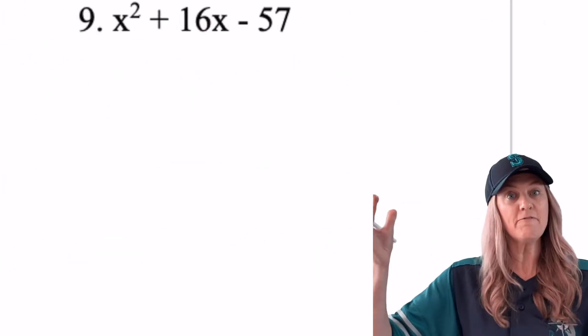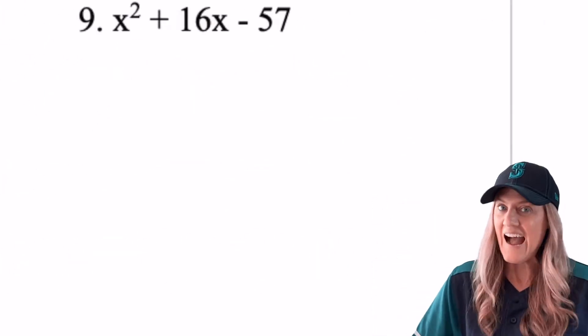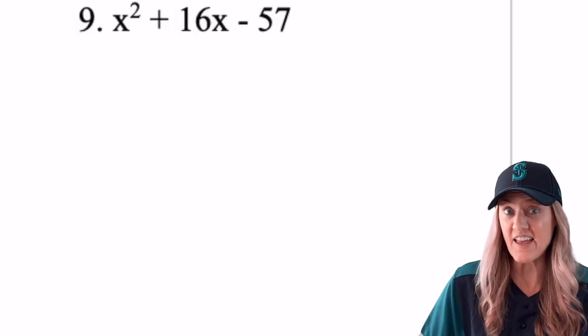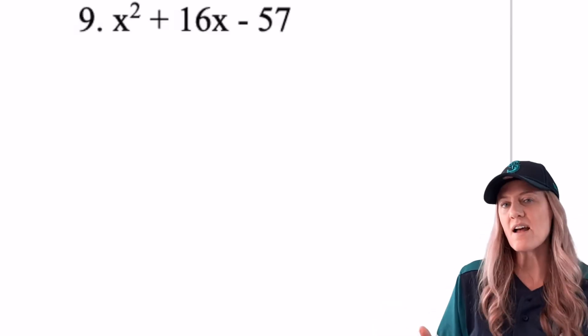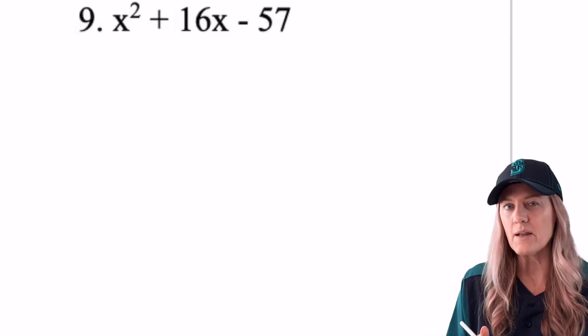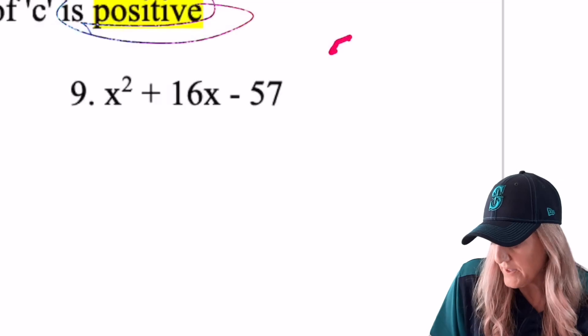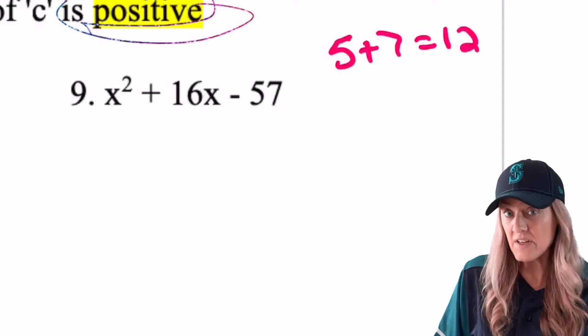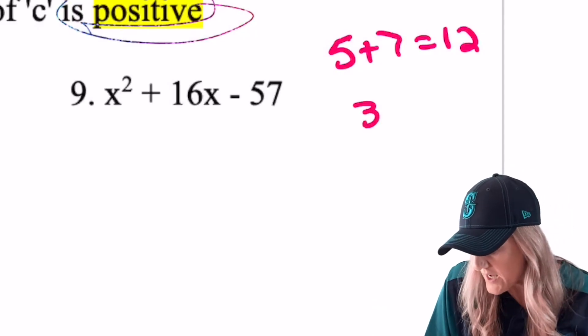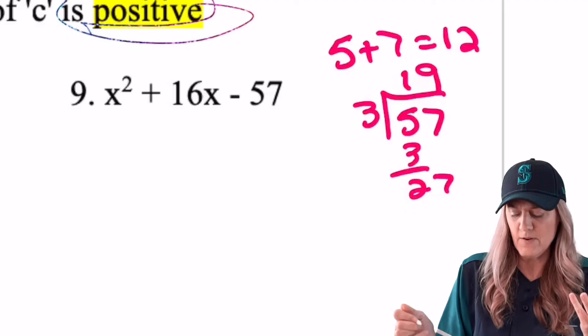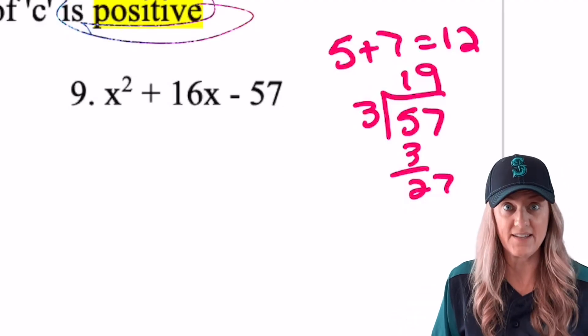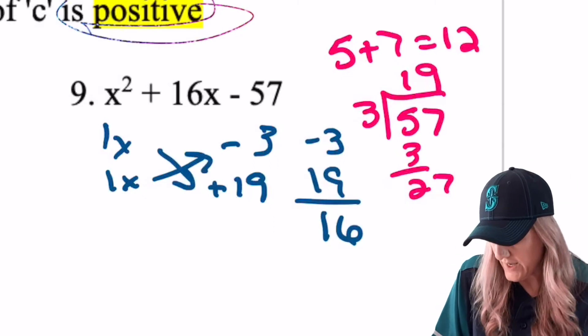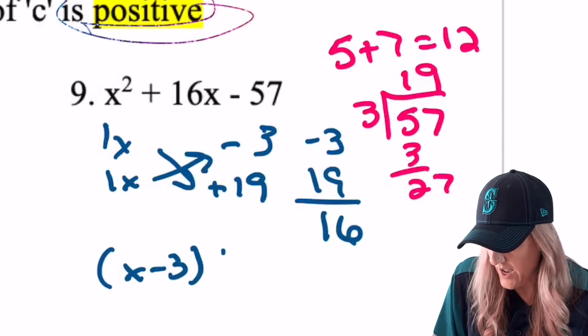What about this last one? 57 is our C value. I like 57. Doesn't it look prime? I always think it looks prime, just like 51 looks prime. But it's not prime. We know it's not divisible by 2 because it's not even. But what about 3? Well, let's check. 5 plus 7 is 12. 12 is divisible by 3. Therefore, 57 is divisible by 3. So 3 into 57. 3 times 19 is 57. I got it. Want to race now? Yep. We got it. X minus 3, X plus 19.